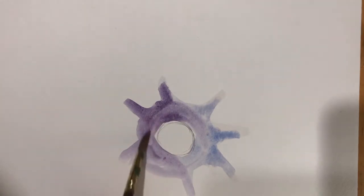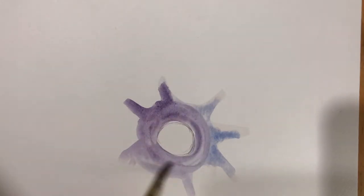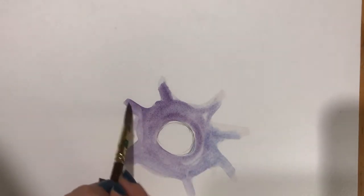So now our cell body has a pretty good shape around that nucleus. And the cell body is going to be that largest section of the neuron.